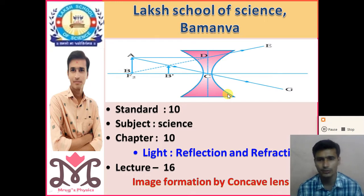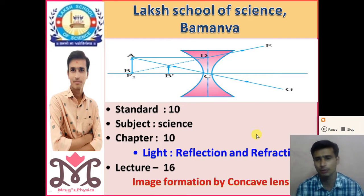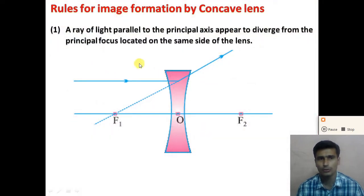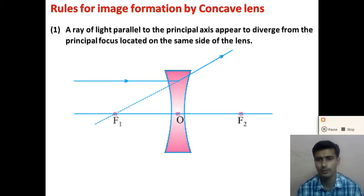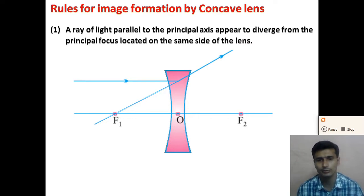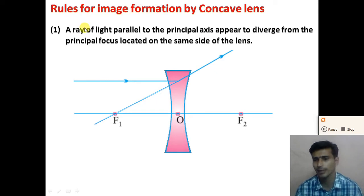First of all, let us start with the rules for making a ray diagram by a concave lens. We use these rules to draw a ray diagram by a concave lens. The first rule for making a ray diagram by a concave lens is: a ray parallel to the principal axis...